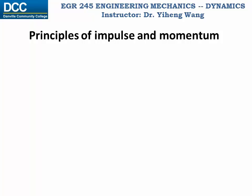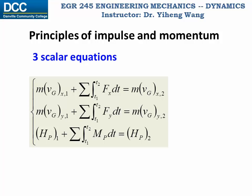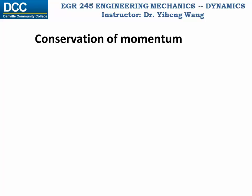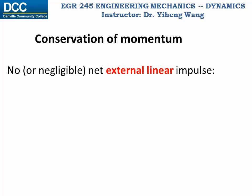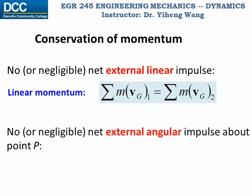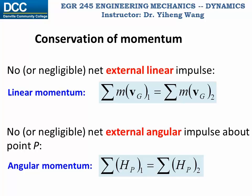The principle of impulse and momentum for rigid body planar motion can be written as three scalar equations: the principle of linear impulse and momentum along x, along y, and the principle of angular impulse and momentum about an arbitrary point P. This set of equations applies not only to a single rigid body but also to a system of bodies. Just as in particle kinetics, if there is no or negligible net external linear impulse, linear momentum is conserved. If there is no or negligible net external angular impulse about a point P, angular momentum is conserved about that point P.